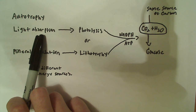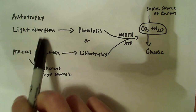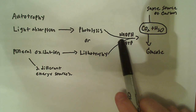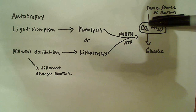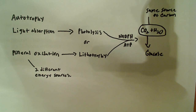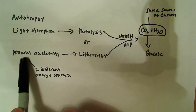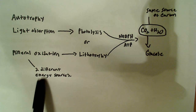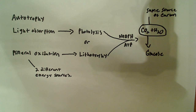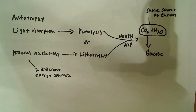So we have light absorption for photoautotrophs. Anytime you have light, you're talking about photo. Photoautotrophs go through the process of photolysis — the breakdown of the water molecule — and then produce NADPH and ATP. That goes into the process of CO2 plus H2O being fixed into glucose. This is the carbon fixation part and this is the energy portion. For chemoautotrophs, we have mineral oxidation instead, but in the end the carbon fixation process is the same — they use the same process and the same carbon source, CO2.